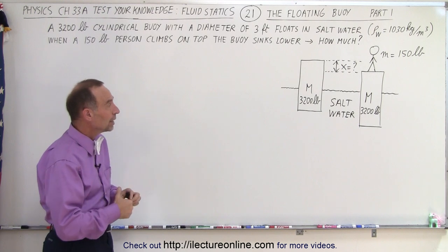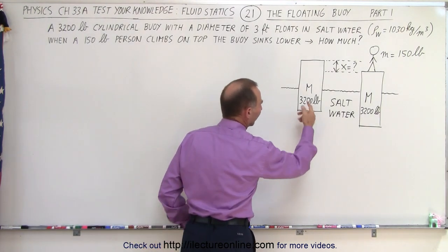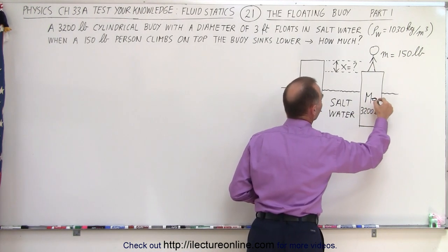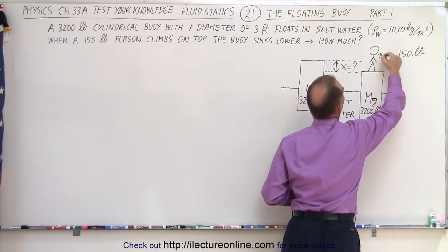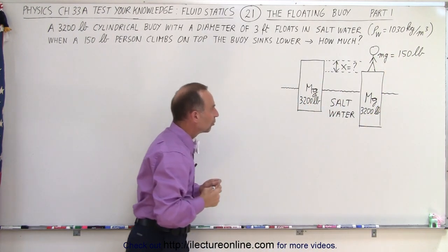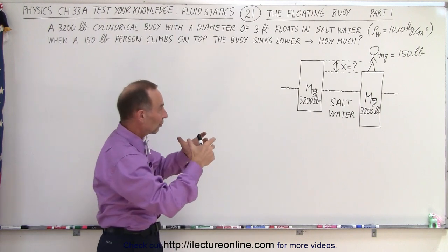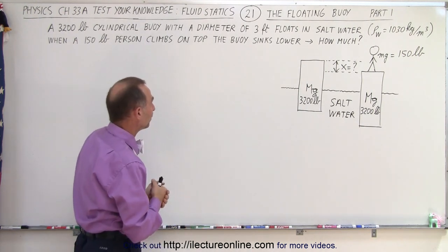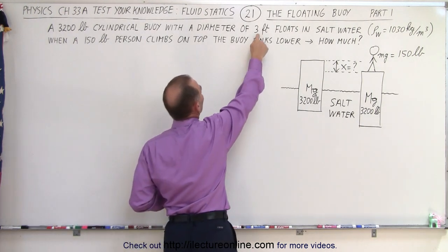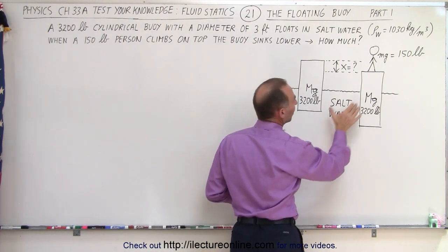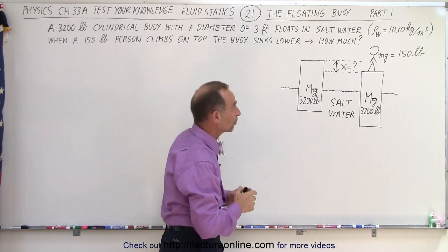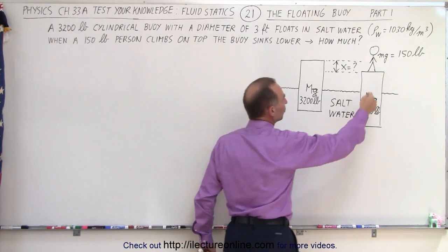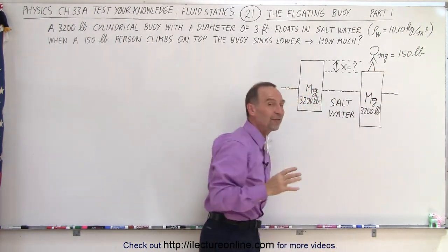We have a metal buoy where the weight, MG, is equal to 3200 pounds. So we have a metal buoy with a weight of 3200 pounds, situated in salt water — presumably the sea or the ocean — and it has a cross-sectional area of 3 feet. Salt water has a density of about 1,030 kilograms per cubic meter because of the extra minerals and salts dissolved in the water. Then a person gets on top of the buoy with a weight of 150 pounds.